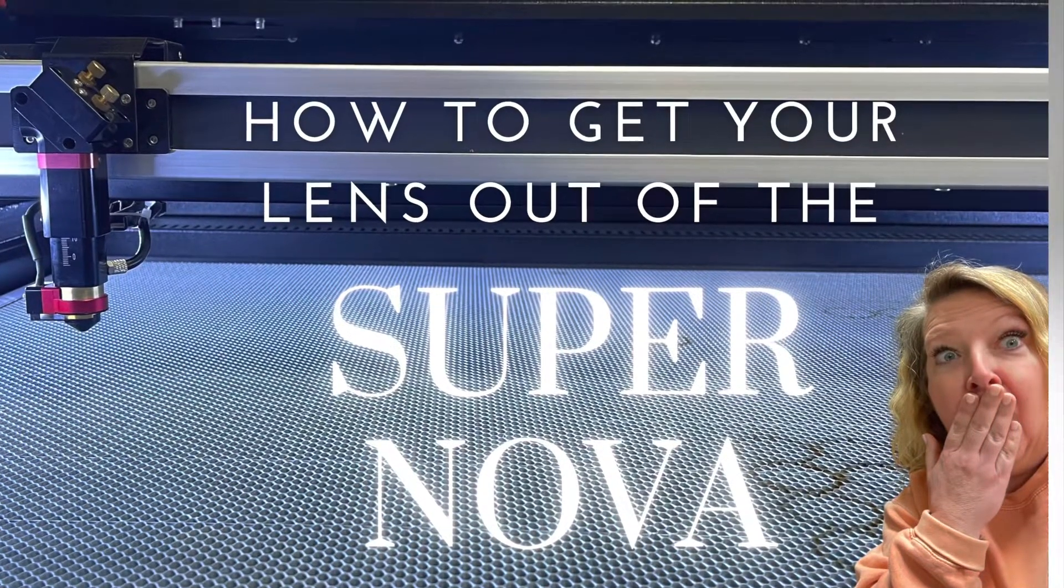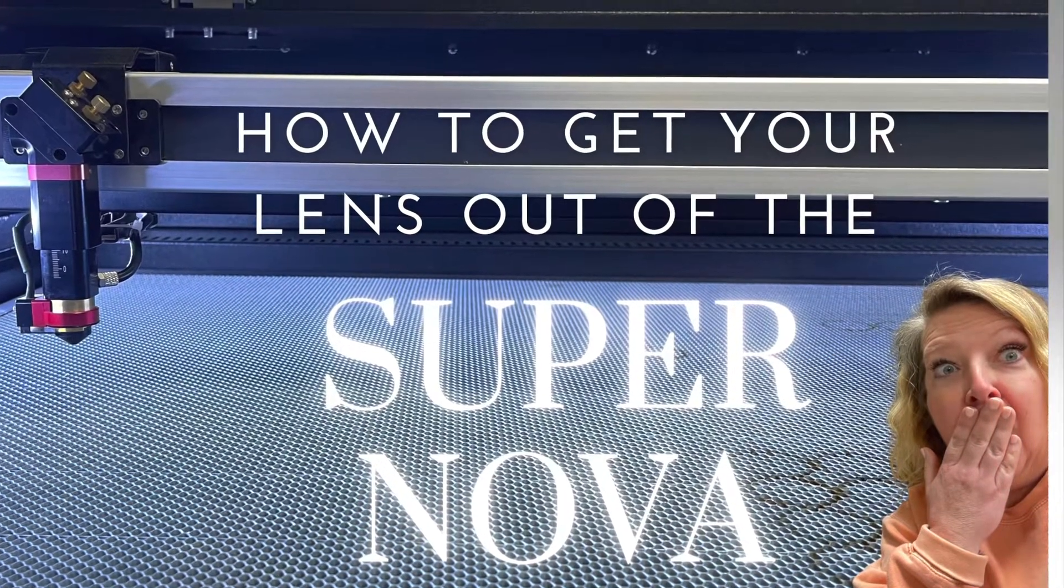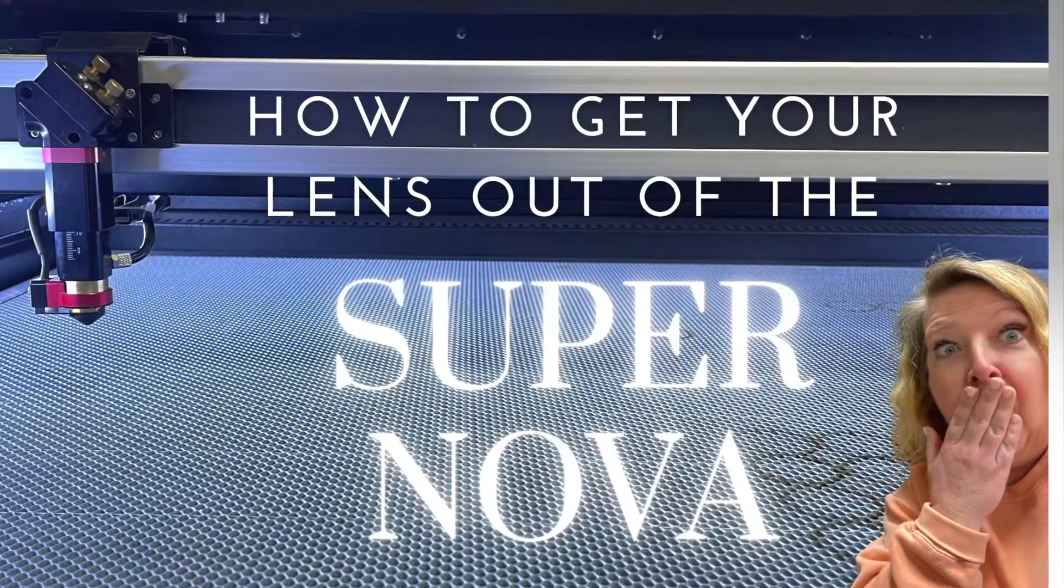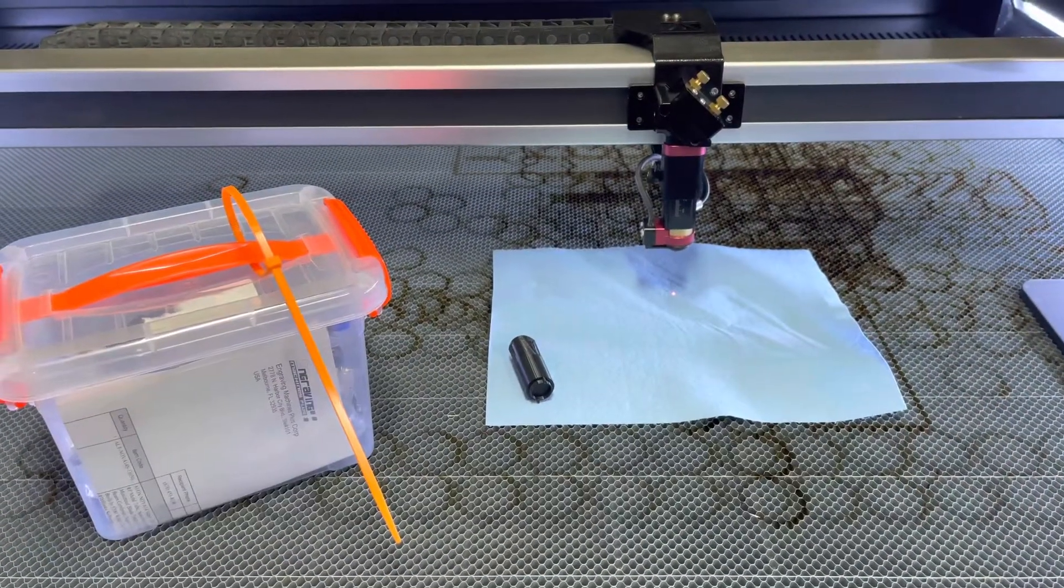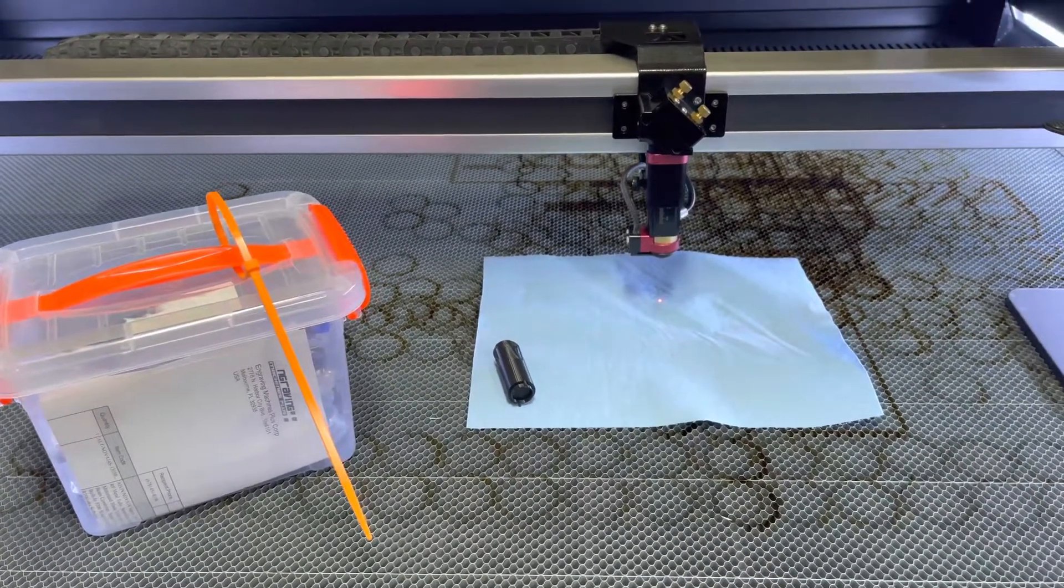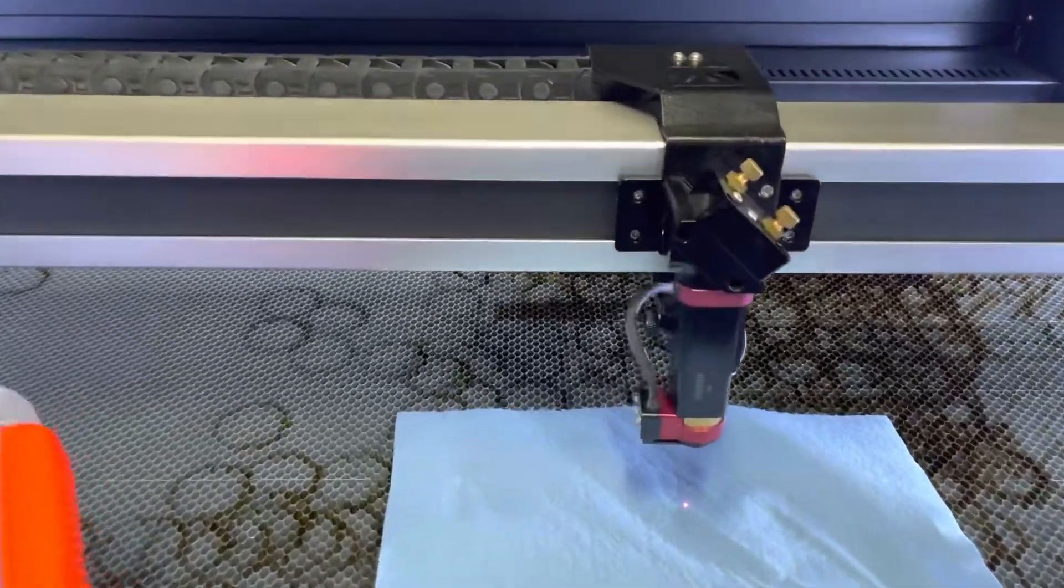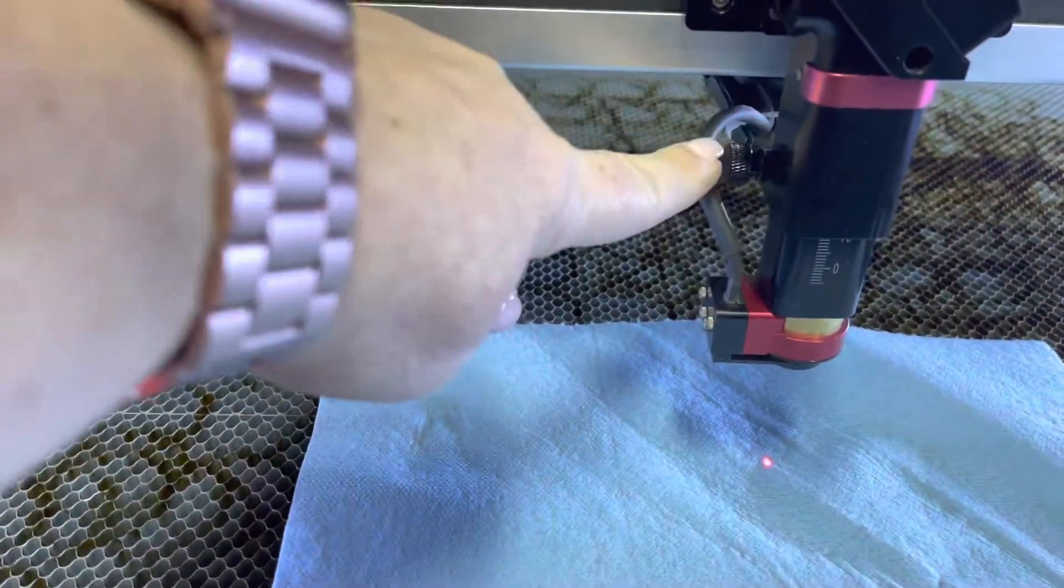Hi, welcome back to Just Peachy About Lasers. Today you're going to see how to get your lens out of the Supernova. What you're going to need is your toolkit and the little black tool that helps to unscrew your lens. I also like to just put a paper towel down just in case I were to drop something.